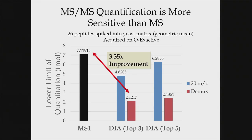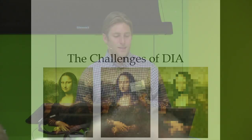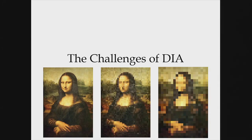The promise of DIA is that we're acquiring a molecular image or digital archive of the sample that can be mined over and over. There's no retention time scheduling in DIA, which is a significant practical advantage. We can directly query data for peptides of interest and get a p-value for those peptides, with better quantitation than DDA in a complex mixture. The challenge is that if this image quality is poor, the comprehensiveness doesn't help — we need the data to be meaningful.